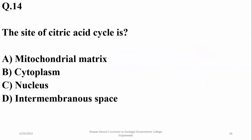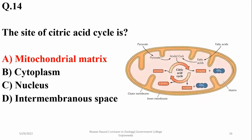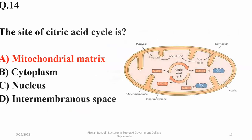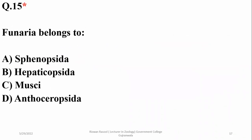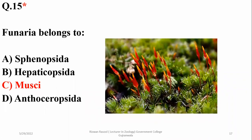Question fourteen: the site of the citric acid cycle (Krebs cycle) in the cell is the mitochondrial matrix, so the answer is A (alpha). Question fifteen was about Funaria, which belongs to class Musci or sub-division Musci in bryophytes, also known as Bryopsida. The right option is C (Charlie).